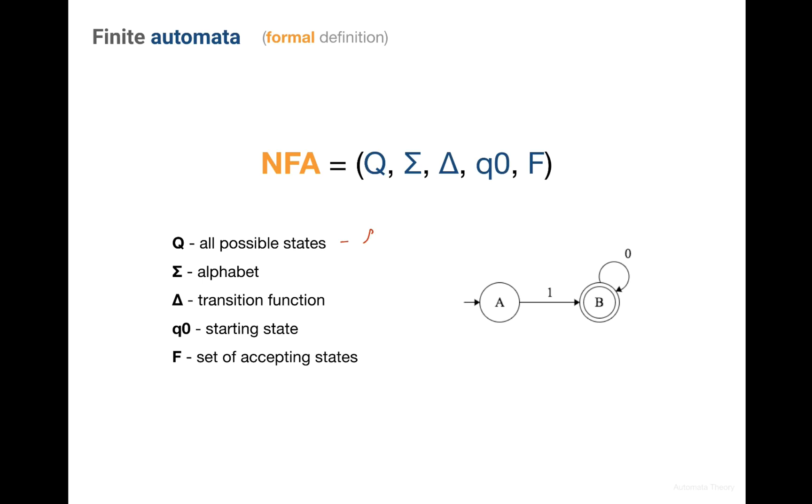Q is the set of all possible states. Σ is the alphabet, and recall what alphabet is from the previous lecture - it's all characters which can be used in our strings.